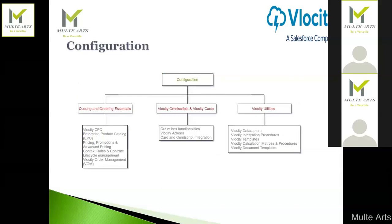Moving on to configurations — we have quoting and ordering configurations. Under Velocity CPQ, we'll cover how to create products, attributes, price lists, how to associate products to parent products, and how to create discounts and promotions. We'll also touch on contract lifecycle management at a basic level and Velocity order management, though those won't be covered in depth in this batch.